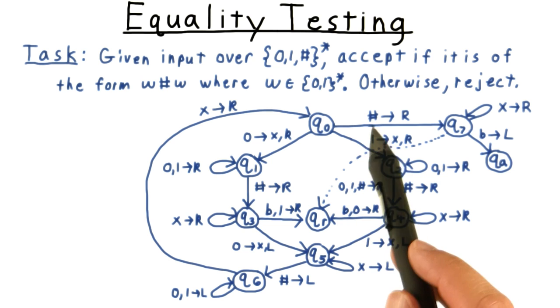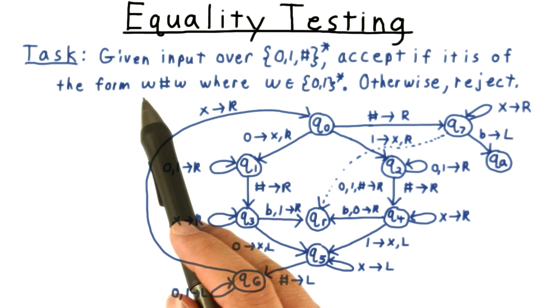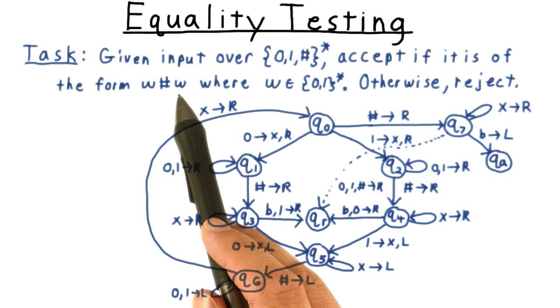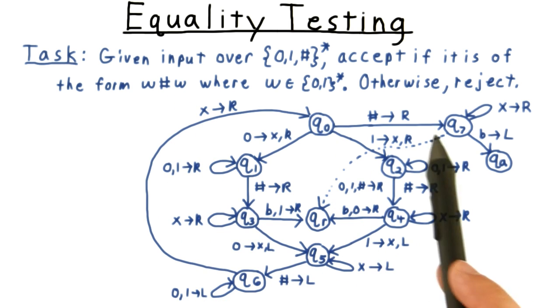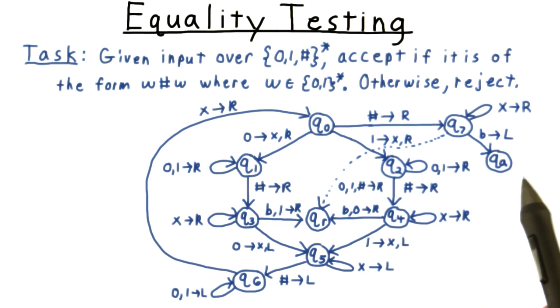When in this phase, we encounter the hash mark, that means that we've matched all of this first string here. And so we just need to check that this string here isn't any longer. So we move past all the x's, and if we encounter a blank next, that's great, we accept.